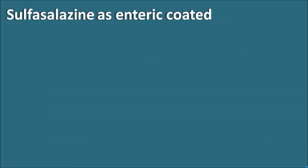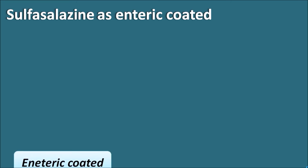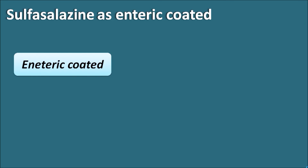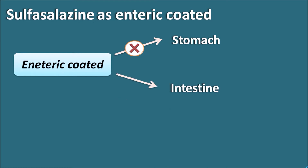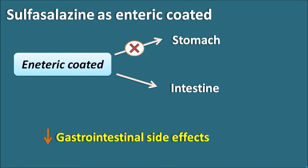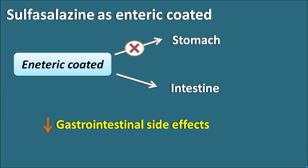Sulfasalazine can also be given as an enteric-coated tablet. When given in this form, the drug is not released in the stomach due to the enteric coating. It is mainly released in the intestine and then reaches the colon where it is cleaved into 5-aminosalicylic acid and sulfapyridine. The main advantage of enteric-coated tablets is to decrease the gastrointestinal side effects of sulfasalazine.